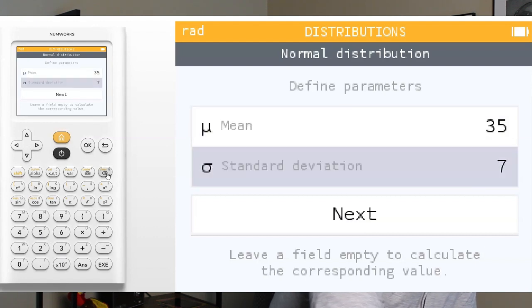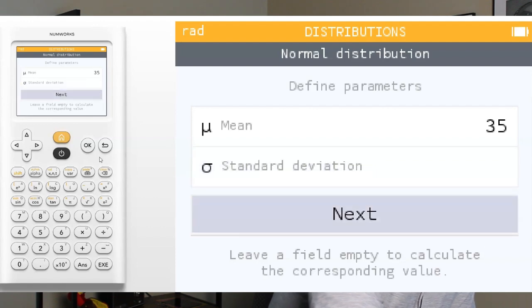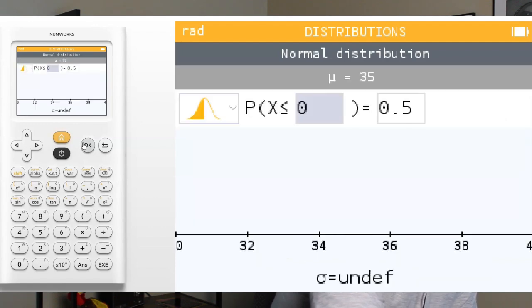And it tells us that we have a set of data that does follow a normal distribution with a mean of 35. So we're going to change the mean to 35. But the question is, what's the standard deviation? We don't know it. So when we get the standard deviation here, we're going to hit the delete button or clear button, and we're just going to leave it blank.